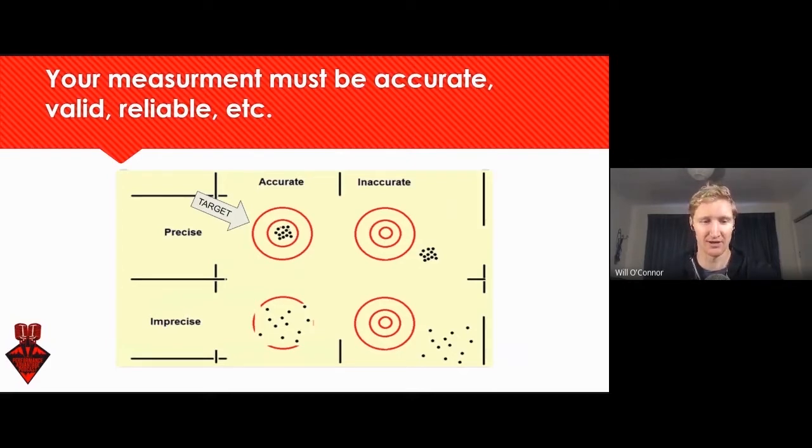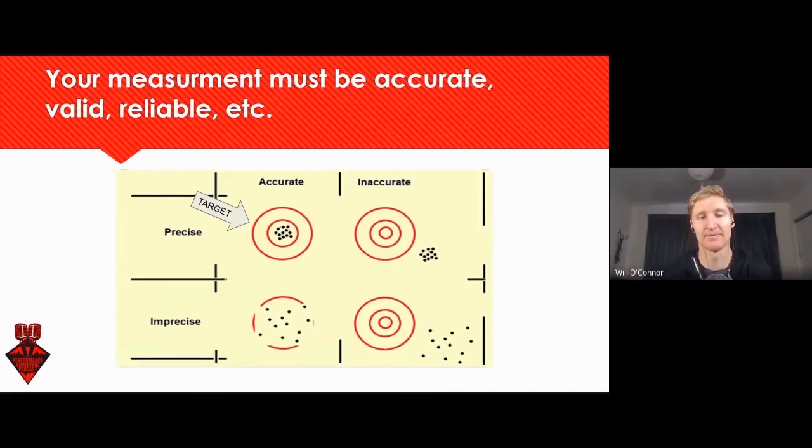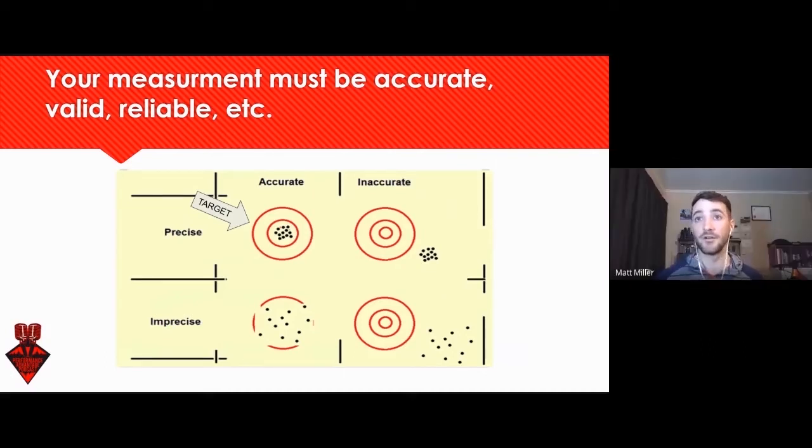But what about power meters? I think power is on a different part of this graph, depending on where you're looking at it. So if we're looking at power on an uphill, it's precise and it's accurate. It's telling us what we need to know. But if we're looking at it on a downhill, it's super accurate, but it's not really telling us much because there is pretty much zero power output. We're just kind of coasting. So zero, that's accurate, but that doesn't really mean anything to us. Whereas heart rate could still be elevated.